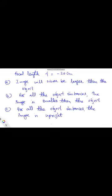For this diverging lens, in the first part of the problem we have to find the range of the object distance for which the height of the image will be larger than that of the object. The image formed by a diverging lens will never be larger than the object.